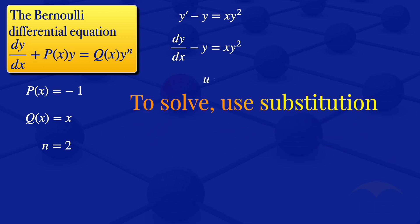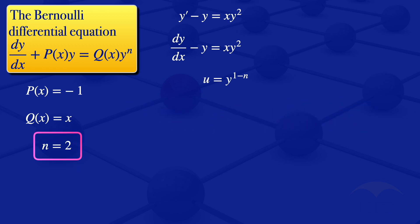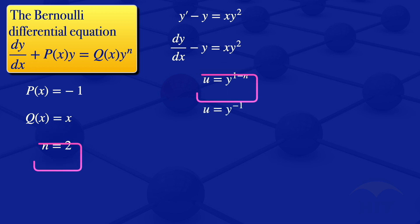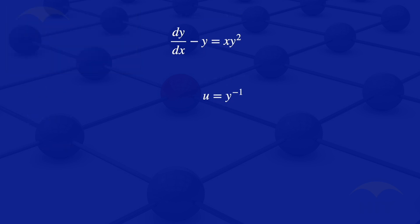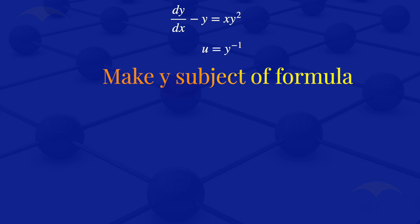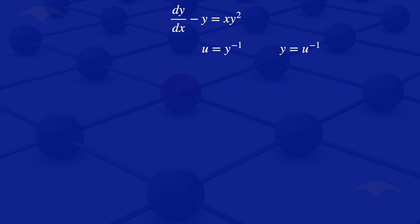To solve a Bernoulli equation, we use the substitution U is equals to Y to the power 1 minus N. In this case our N is 2, so substituting 2 into this equation we have U is equals to Y to the power minus 1. Making Y the subject of the formula gives us Y is equals to U to the power minus 1.